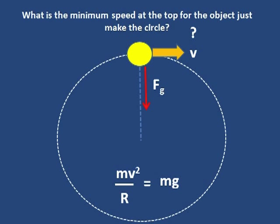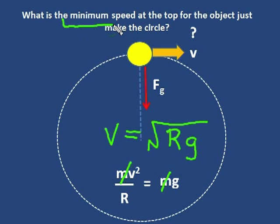It's easy to solve for this velocity. The m's cancel and velocity equals root rg. And this is the velocity where anything greater than this velocity will have enough velocity to maintain the tension and make the circle at the top.